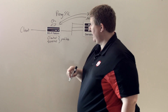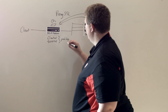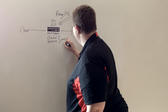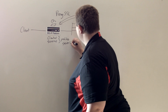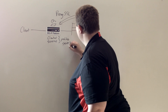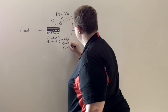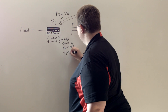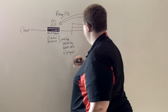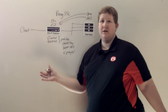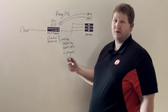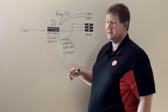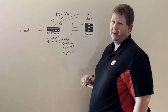And then on these profiles, you put the server private key, the server cert, and then you check the proxy SSL box. Every other setting just leave alone. But you create a specific profile for the proxy SSL on client SSL and server SSL with these settings.